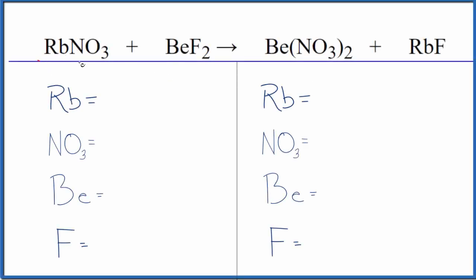Let's balance the equation for RbNO3 plus BeF2. This is rubidium nitrate and we have beryllium fluoride.